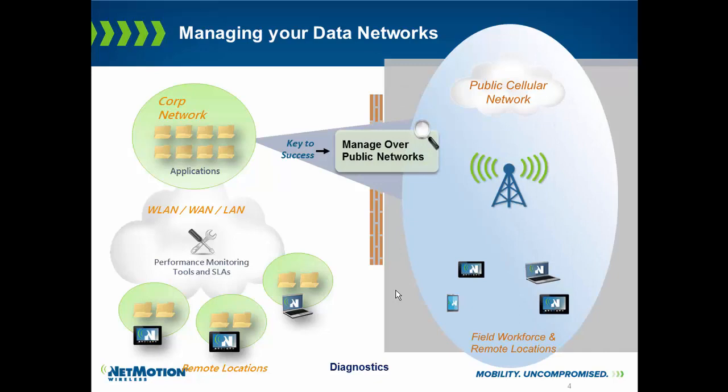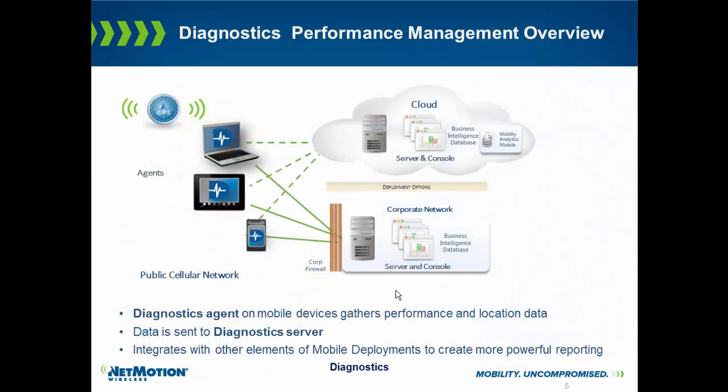NetMotion Diagnostics gives you visibility into the public cellular network. On each device there's a small agent, and every five seconds it takes a snapshot of information about what's happening on the device in regard to the cellular network. It can look at signal quality, who the user is that's logged on, the technology type, carrier information such as IMEI, and if GPS is available it will also grab GPS data so it understands where the problem is occurring.